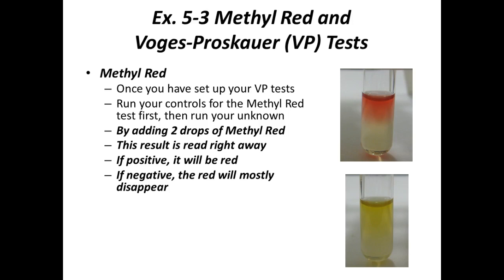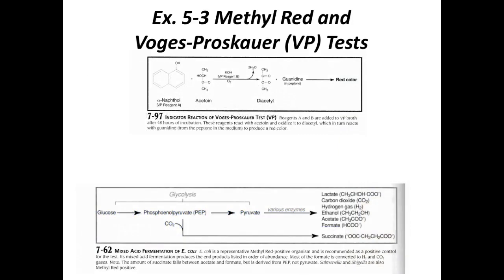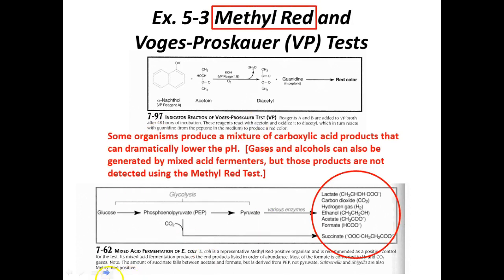For the methyl red test: this is just a quick pH test, which is why we were able to read results immediately. Orange or yellow is not red — only red is a true positive result, meaning you have a very low pH and lots of acids have been produced. E. coli is an example of a very strong mixed acid fermenter — it produces a lot of acids: lactate, acetate, formate, succinate, and also alcohol, hydrogen gas, and carbon dioxide gas.